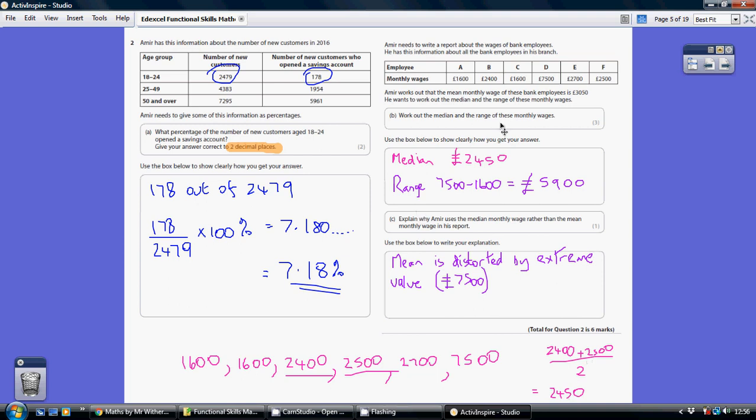Secondly, we're being asked to work out the range. The range is simply the difference between the biggest wage and the smallest wage. 7,500 is the biggest wage, 1,600 is the smallest wage. So the difference is 7,500 minus 1,600, which is 5,900.